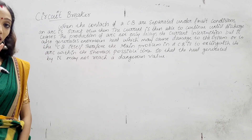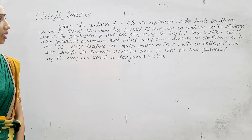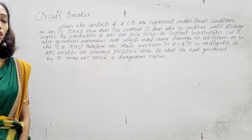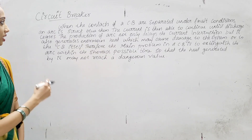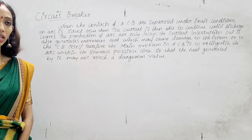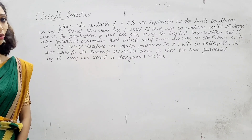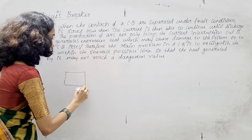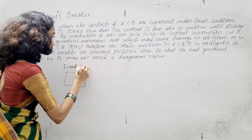When the contacts of a circuit breaker are separated under fault condition, the contacts become loose and separate. An arc is struck between the fixed contact and the moving contact — the arc is formed between them.